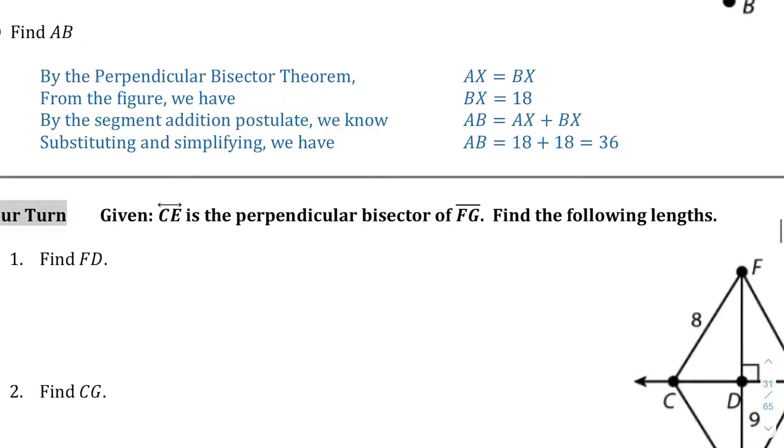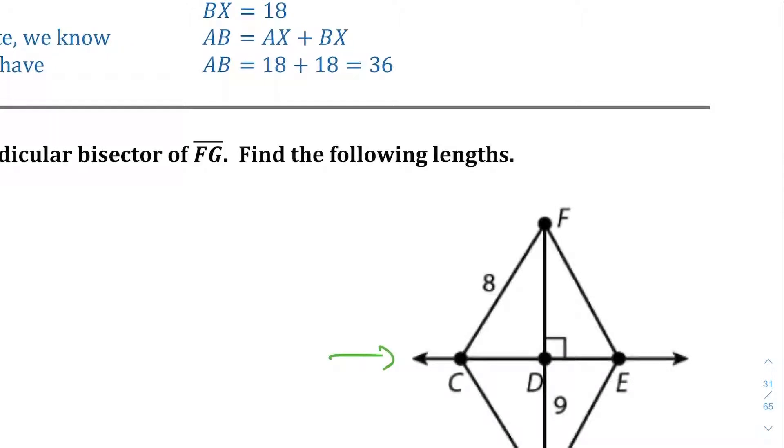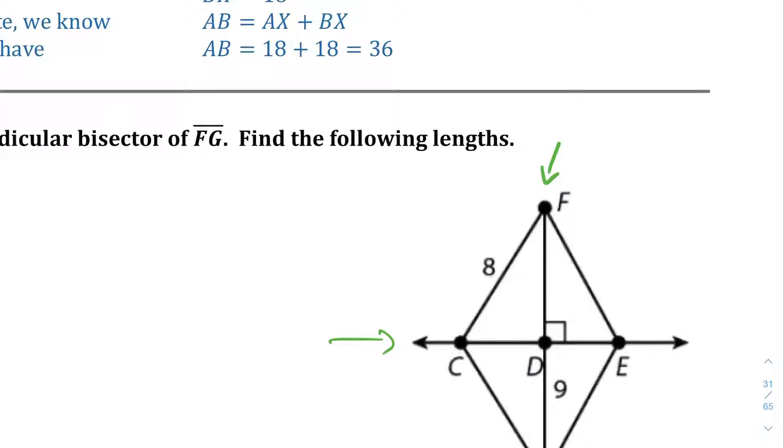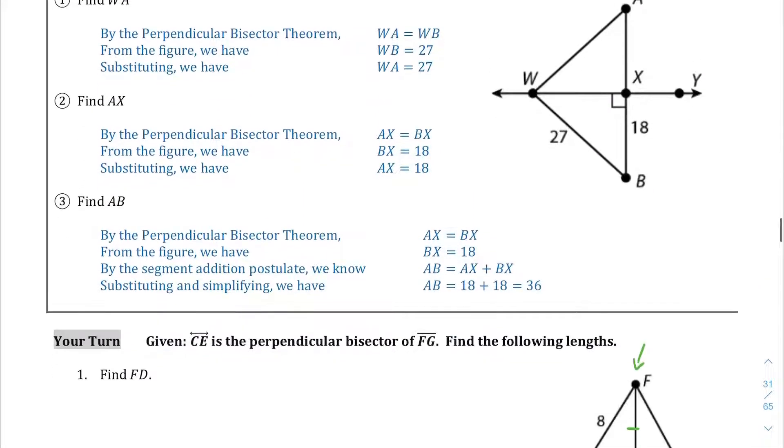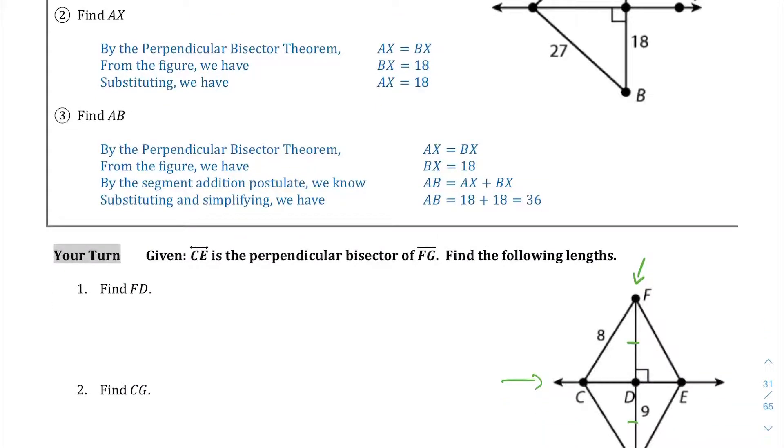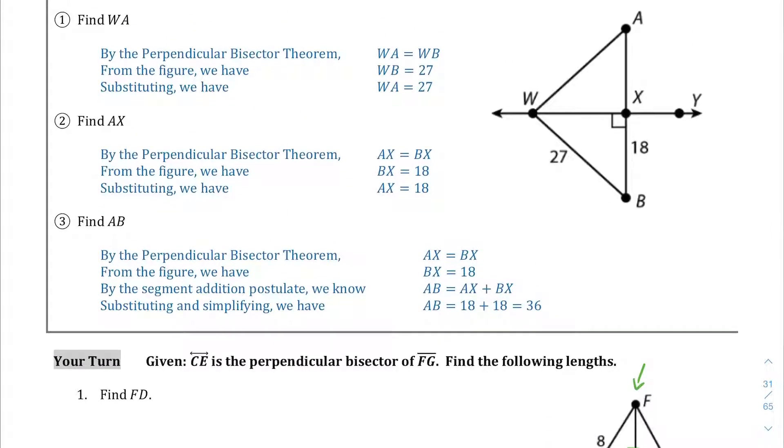So that's what we're going to do on this next page here. We're given this picture and we are told that CE, this line right here, is the perpendicular bisector of segment FG. What that means is that whatever the length of FG is, it cuts it exactly in half. This side from F to D is going to be equal to the length from D to G. Now you don't have to do this every time, but we're going to create these little mini proofs just like in the example above. This might seem like overkill to some of you because just looking at this and seeing that distance DG is 9, you'll say Mr. Kim, FD is also 9. It's obvious. But because this is the first time we're going through it, we do want to write out a mini proof for it.